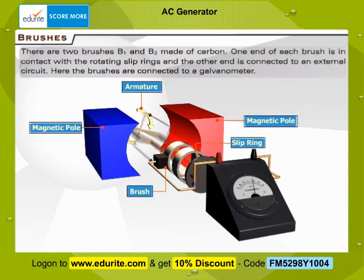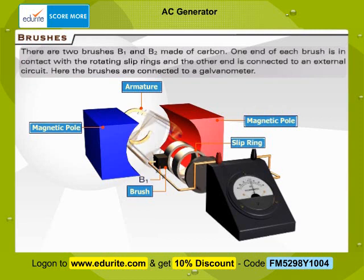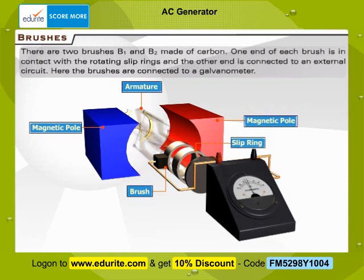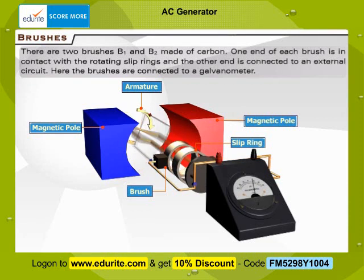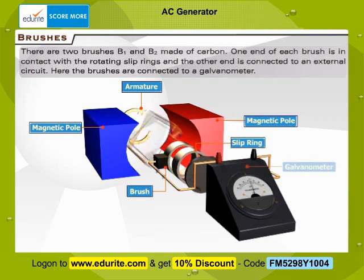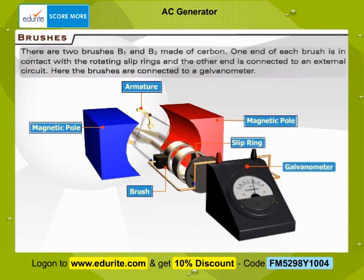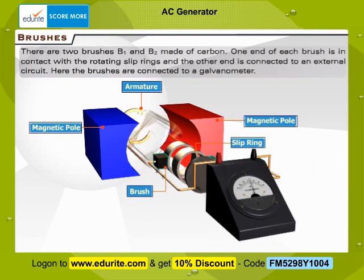Brushes: There are two brushes, B1 and B2, made of carbon. One end of each brush is in contact with the rotating slip rings and the other end is connected to an external circuit. Here the brushes are connected to a galvanometer. Observe that the brushes do not rotate with the coil.